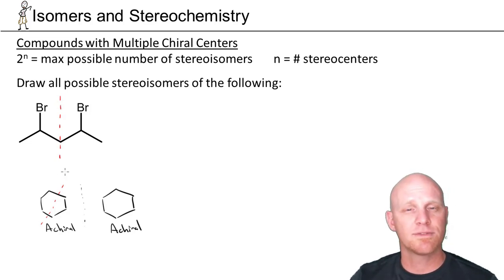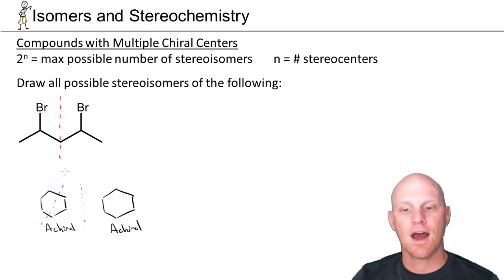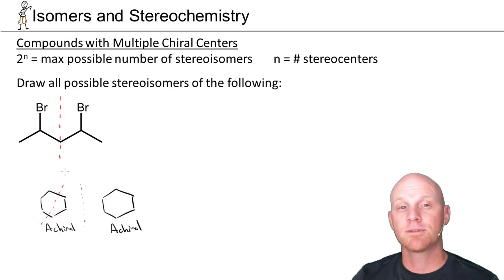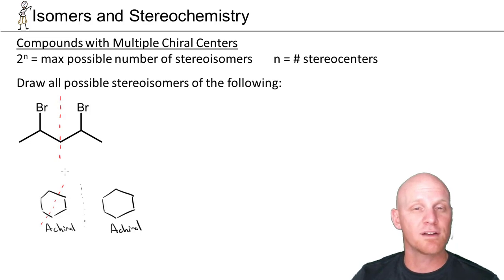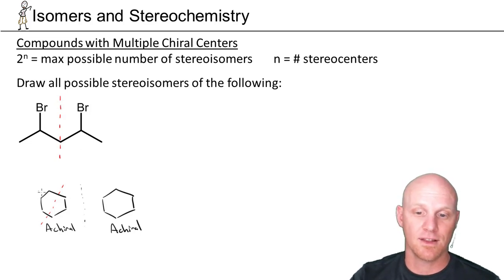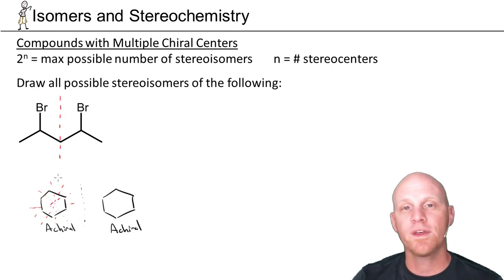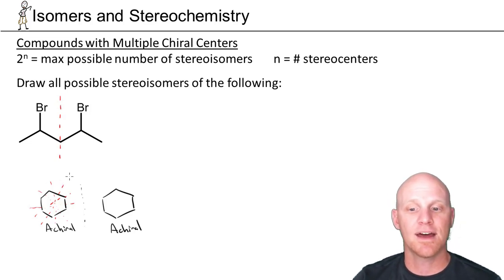We looked earlier at finding chiral centers to identify chiral compounds. Now, to find achiral compounds, you might look for the absence of chiral centers, or look for one of these internal mirror planes — you only need to find one. Cyclohexane has many of them. You only need to find one internal mirror plane, and that compound is definitely achiral — it'll be identical to its corresponding mirror image.